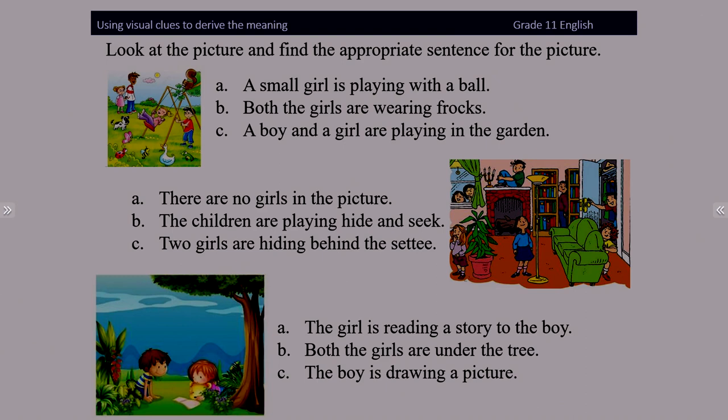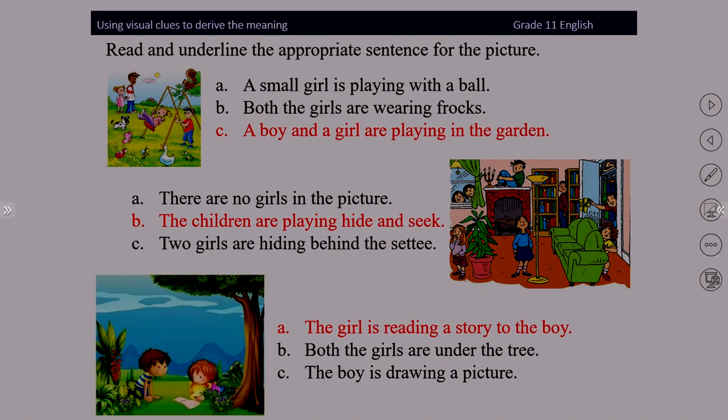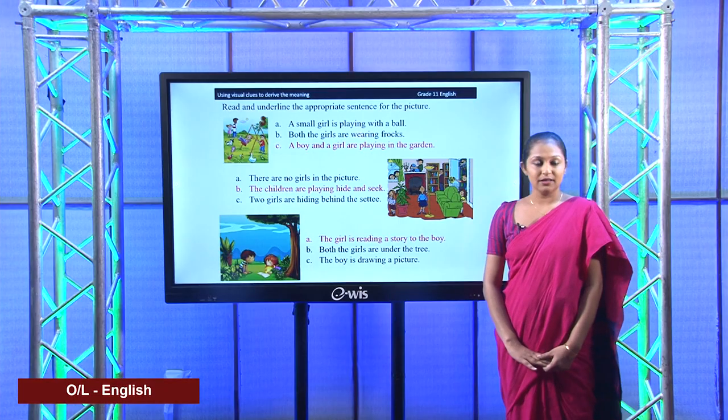I hope you have done it. Let's see the answers. The first picture: a boy and a girl are playing in the garden. Picture number two: the children are playing hide and seek. Let's look at the third picture — the most appropriate sentence is: the girl is reading a story to the boy. I hope you have got the correct answers.